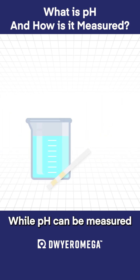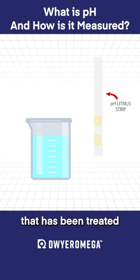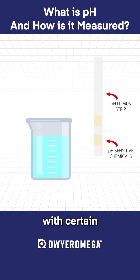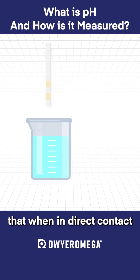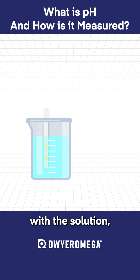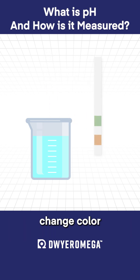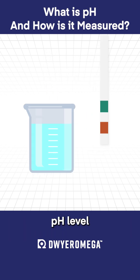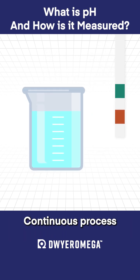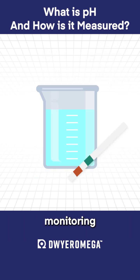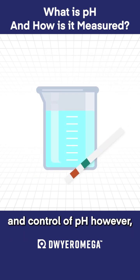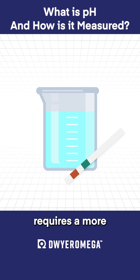While pH can be measured using a litmus strip that has been treated with certain chemical powders that, when in direct contact with a solution, change color according to the pH level of that solution, continuous process monitoring and control of pH, however, requires a more sophisticated approach.